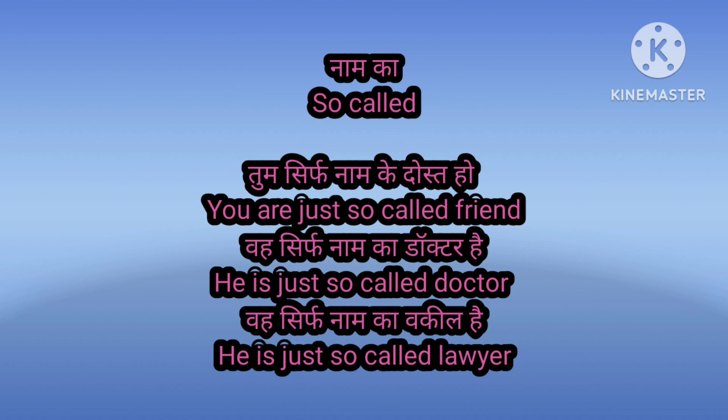Tum sirf naam ke dost ho — you are just a so-called friend. Woh sirf naam ka doctor hai — he is just a so-called doctor. He is just a so-called lawyer. So this way you can make all sentences using 'so-called'.